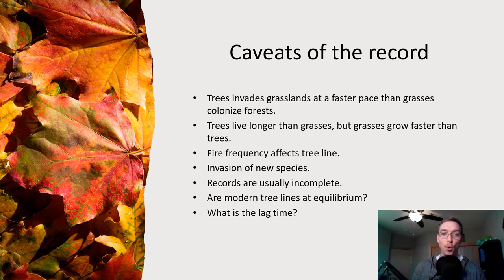Caveats: there's a few. Trees invade grasslands at a faster pace than grasses colonize forests. Trees live longer than grasses but grasses grow faster. Fire frequency affects the tree line. The invasion of new species can be a problem. Records are usually incomplete. Are modern tree lines at equilibrium? That's tough to say. And what's the lag time? That's a little bit tougher to tell.